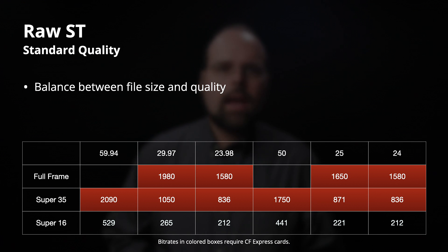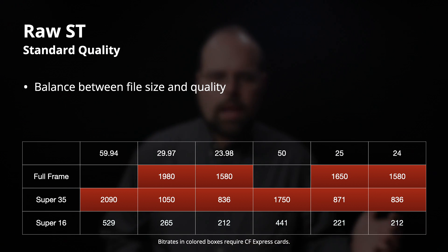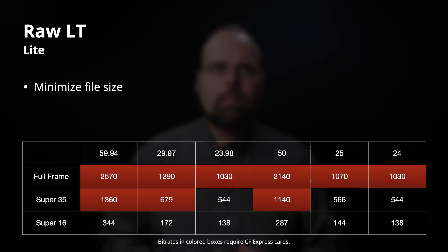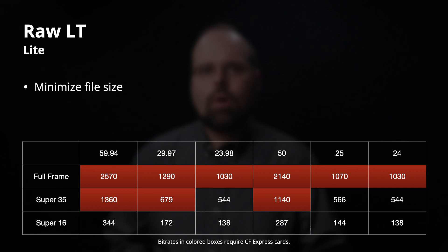RAW ST (Standard Quality) balances file size and compression. Data rates don't drop dramatically but we now have the ability to shoot full frame at up to 30fps at just under 2 gigabits per second. RAW LT (Light), the most file-size-optimized option, is the only setting on the entire camera where you can shoot 8K at 60 frames per second — at almost 2.6 gigabits. None of the compressed options support that high a frame rate at 8K.